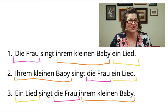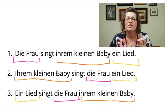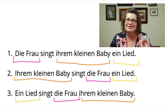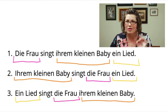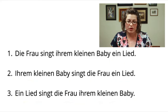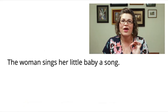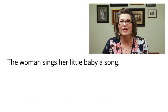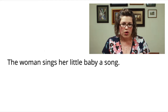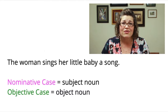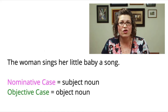German has a flexibility that English does not have, and why German is flexible is the case system — I'll get into the details in a moment. But for now, let's dig into English a little more deeply and go back to our original sentence: 'The woman sings her little baby a song.' This uses what is called the nominative case and the objective case.